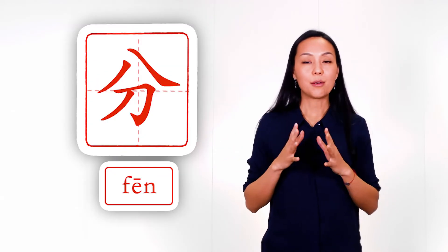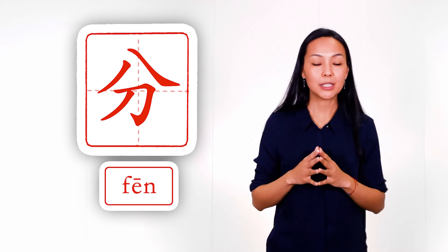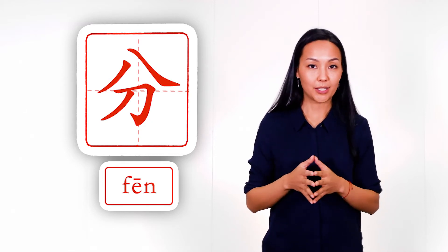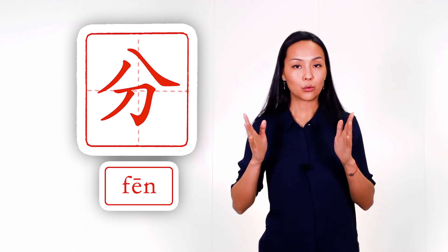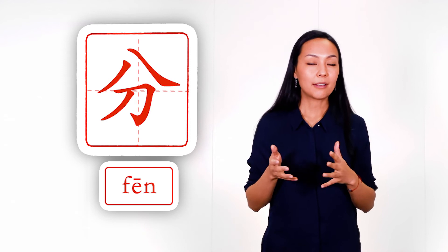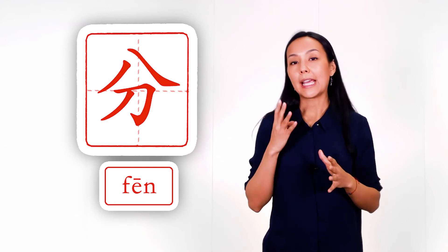And the third character has the main form of this radical, it's divide, separate. And in here we see knife below, and on top we see eight. So knife separates something into eight parts.